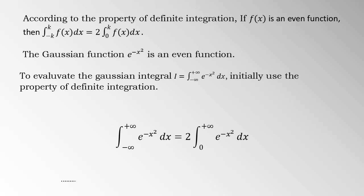According to the property of definite integration, if f of x is an even function, then integral negative k to positive k, f of x dx equals 2 times integral 0 to k, f of x dx.